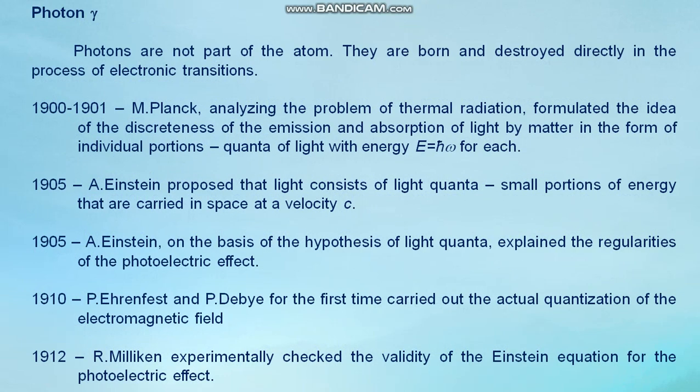Photons. Photons are not part of the atom. They are born and destroyed directly in the process of electronic transitions. In 1901, Planck, analyzing the problem of thermal radiation, formulated the idea of the discreteness of the emission and absorption of light by matter in the form of individual portions, the quanta of light with energy E equal to ℏω. In 1905, Einstein proposed that light consists of light quanta, small portions of energy that are carried out in space at velocity c. Einstein, on the basis of the hypothesis of light quanta, explained the irregularities of the photoelectric effect.